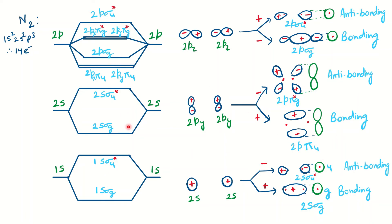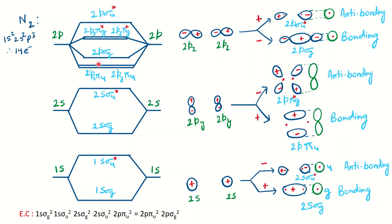Now with 14 total electrons for nitrogen, we fill the energy level diagram: two electrons each in 1sσg and 1sσu, then 2sσg and 2sσu — that's eight electrons total. Then four electrons go into the two 2pπu orbitals (two each), making twelve. The remaining two electrons go into 2pσg. So the full electronic configuration of N₂ is: (1sσg)²(1sσu*)²(2sσg)²(2sσu*)²(2pπu)²(2pπu)²(2pσg)². This is the electronic configuration of nitrogen.